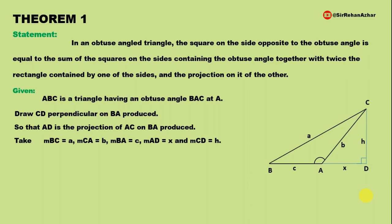The sides of the triangle are named as follows: measurement of BC = a, measurement of CA = b, measurement of BA = c. Measurement of AD = x and measurement of CD = h.